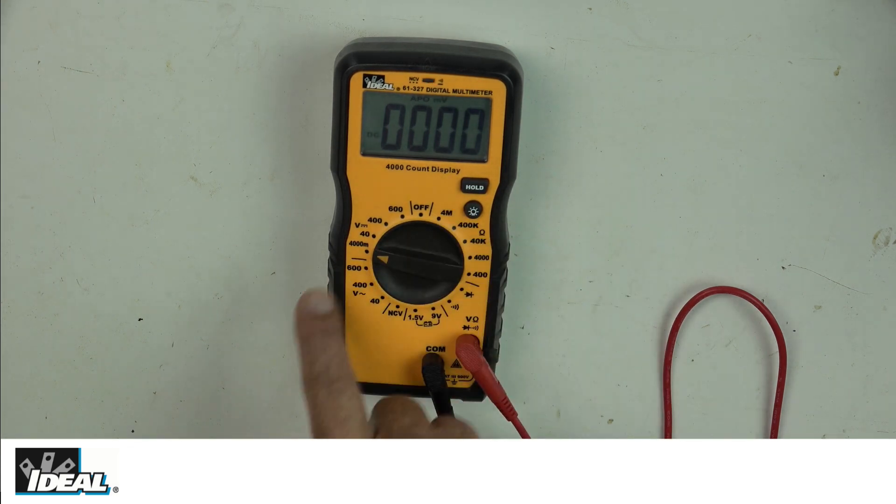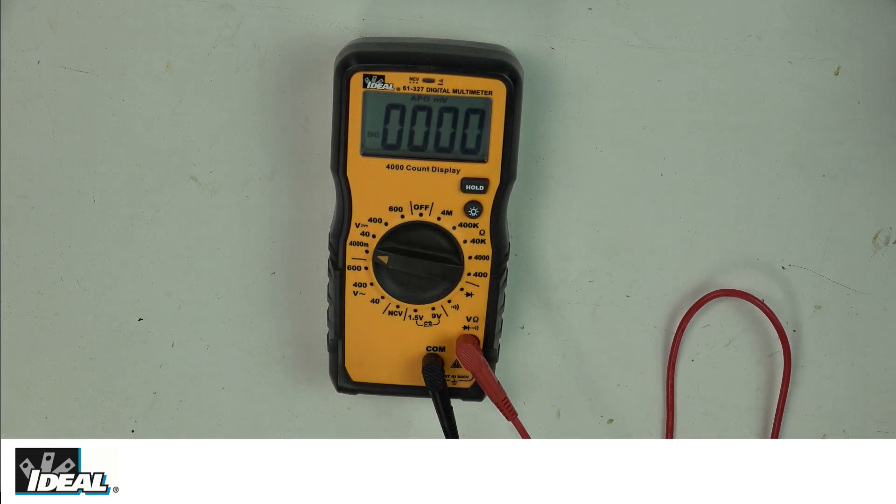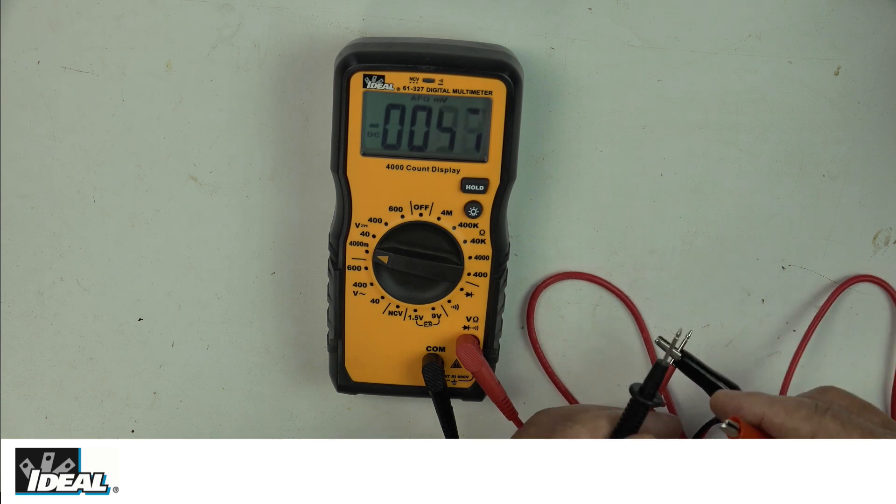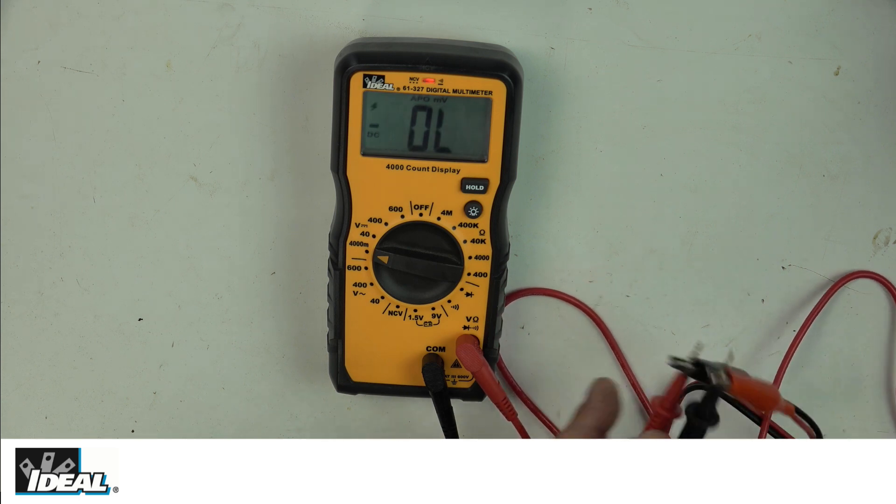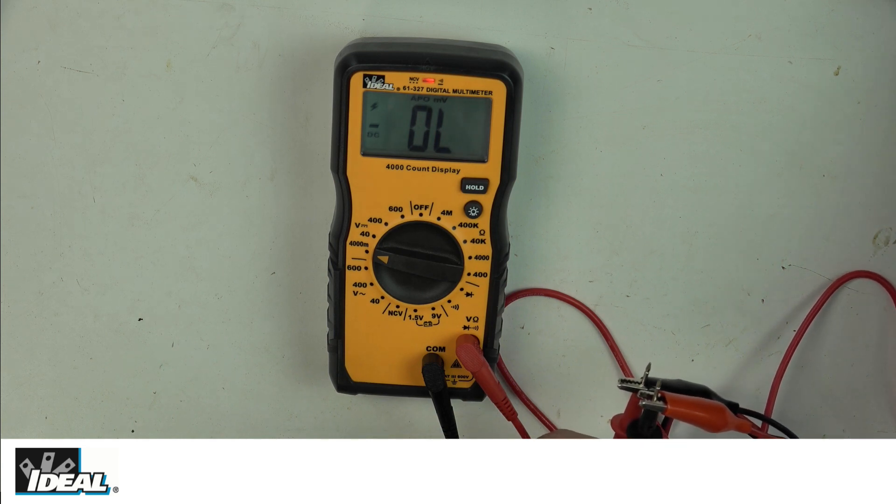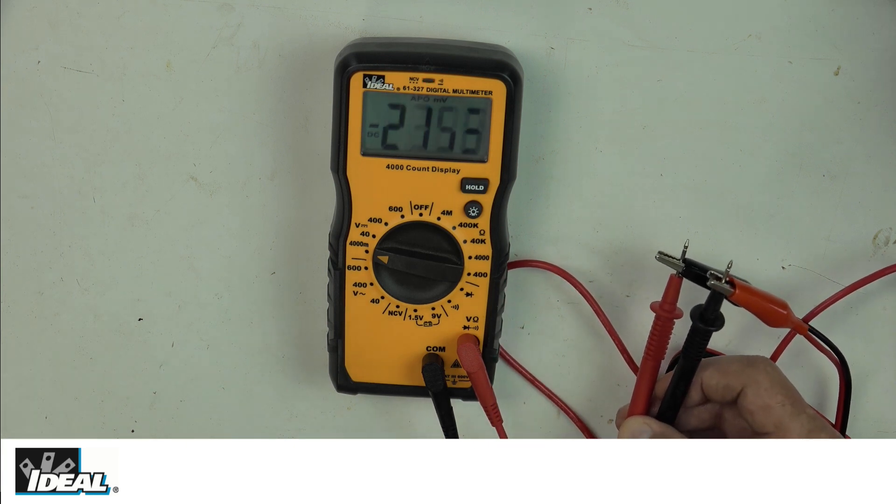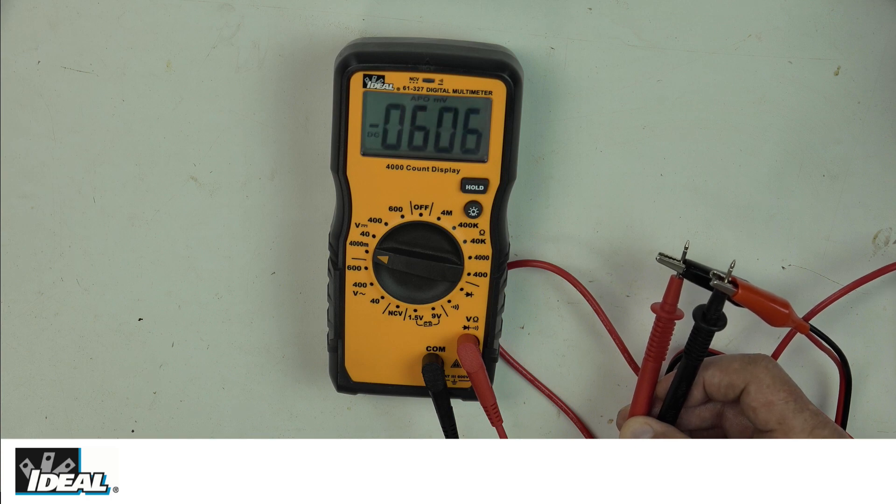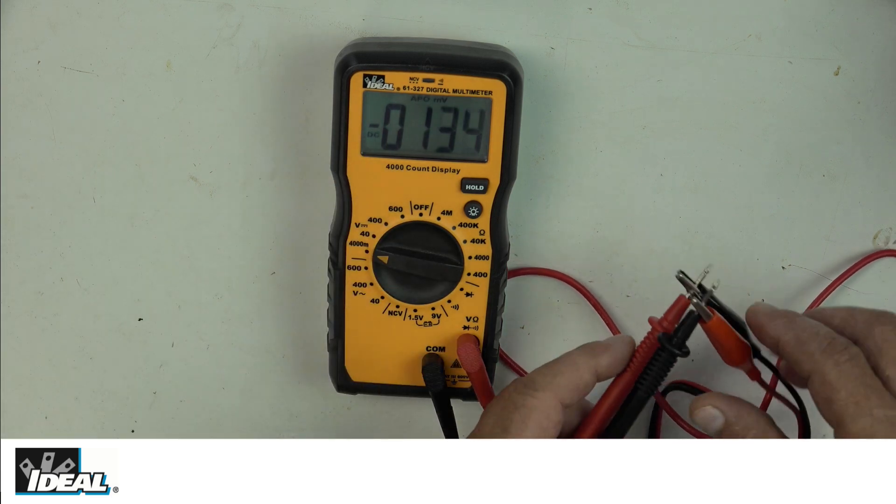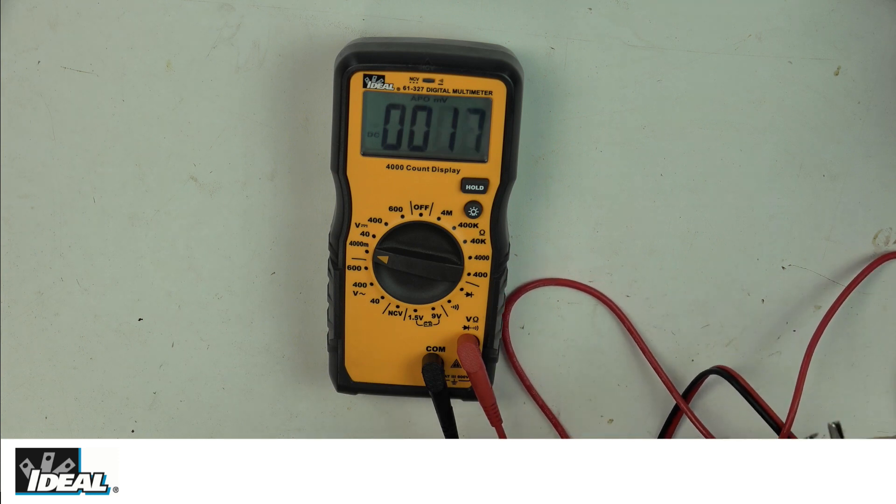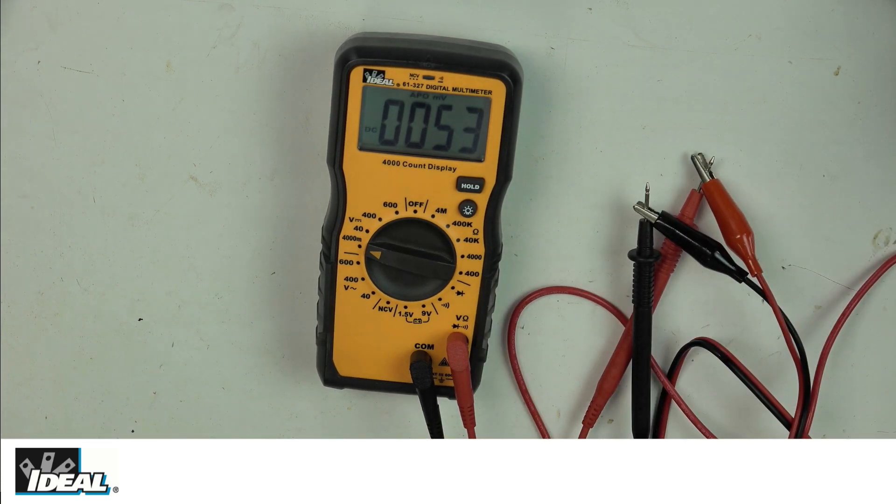I'm going to measure some DC voltage. I'll set it to its lowest setting, which is 4000 millivolts. If I incorrectly put the test leads on the tester - let me crank my power supply down. It's measuring millivolts and giving me a negative sign, which means I have my test leads with incorrect polarity. So I'm going to correct that. Now we're reading around 50 millivolts.